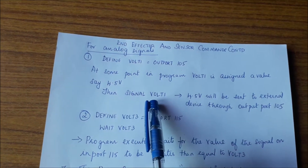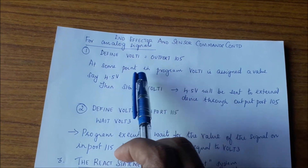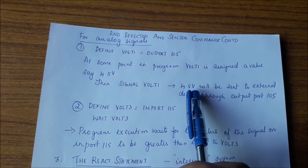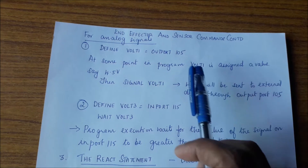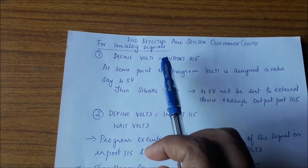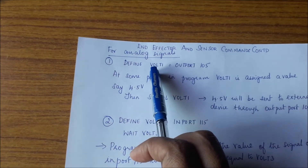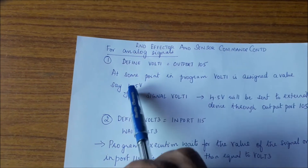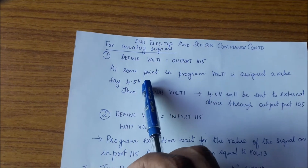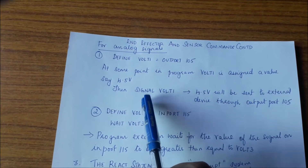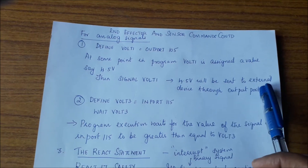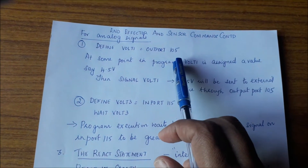Then the command signal volt1 — right now volt1 has become 4.5 volts. So when you give the command signal volt1, that computed value 4.5 volts will be sent to the external device through output port 105. To recap: output port 105 is associated with variable volt1; after computation assigns volt1 = 4.5 volts, the command signal volt1 sends 4.5 volts to the external device through port 105.